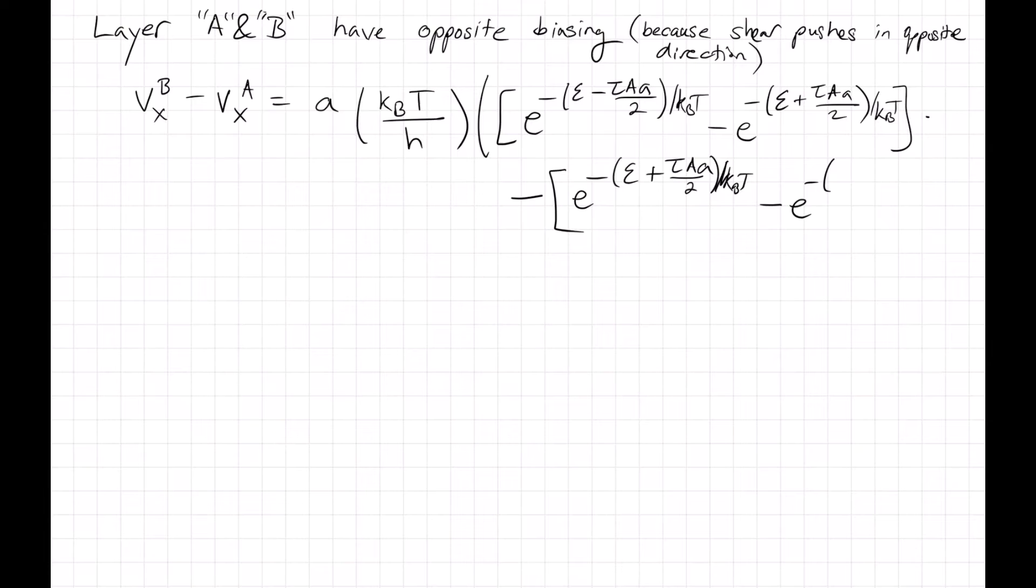and layer A is being biased in exactly the opposite way. So in that layer, forward hopping is anti-biased, and vice versa.